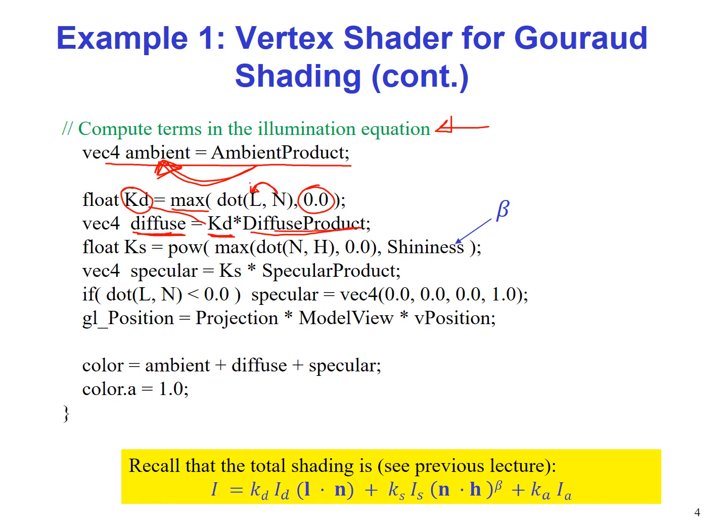And next we calculate the shininess coefficient, or the specular part, using the shininess coefficient beta and the dot product between N and H. And this code is basically implementing our shading equation. These are calculating these terms separately: the diffuse, the specular, and the ambient.